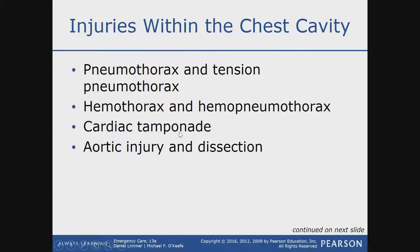Cardiac tamponade means there is fluid building up between the heart itself and the membrane that surrounds it. Every organ in your body has a skin, just like you do — the heart's skin is called the pericardial sac. Cardiac tamponade is when there's blood between that pericardial sac and the heart. If blood continues to build up, it's the same as a tension pneumothorax — that pressure will not allow the heart to contract adequately.